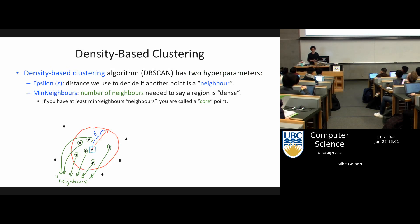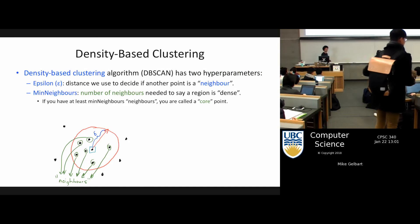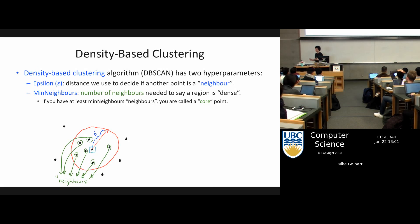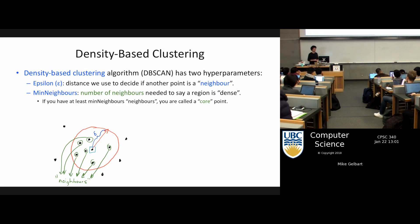The other hyperparameter is the minimum number of neighbors you need to be considered what's called a core point. Remember this is called density-based clustering. What we're really doing is looking for regions of a certain density of points, and if we see that we're going to form clusters.